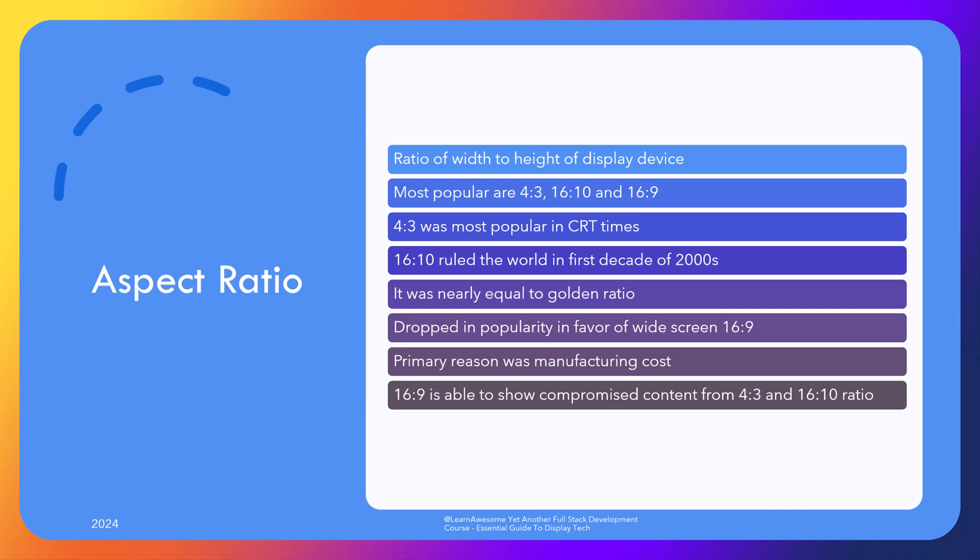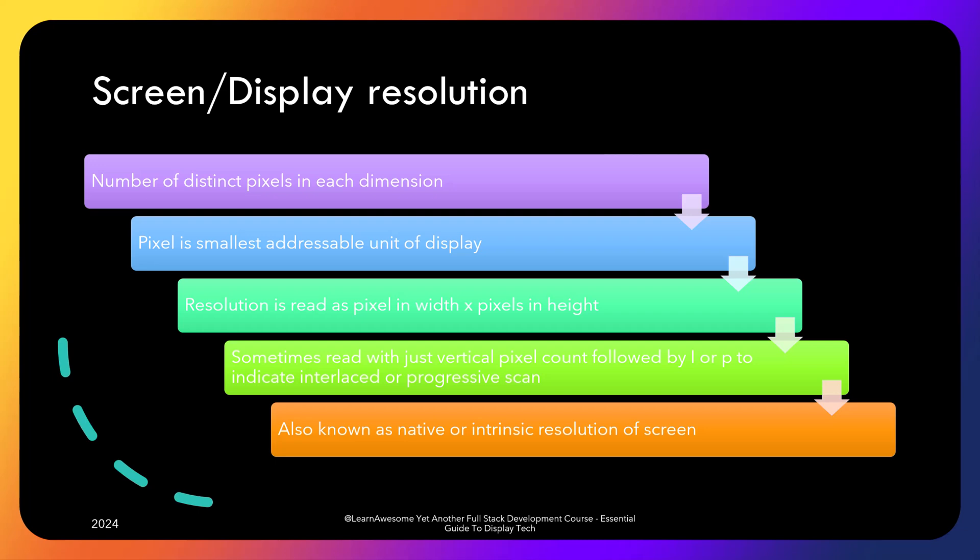Let's move to the related topic of screen resolution. The display resolution or display modes of a digital television, computer monitor, or display device is the number of distinct pixels in each dimension that can be displayed, where a pixel is the smallest addressable element or unit. Display resolution is usually read as the number of pixels in width multiplied by number of pixels in height. There's even a shorthand you might be familiar with — only the number of pixels in height followed by P or I; for example, 720p, 1080i, or 1080p. I or P refer to interlaced or progressive scan, which I'll defer talking about at this time.